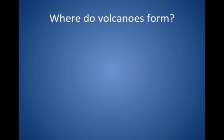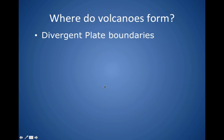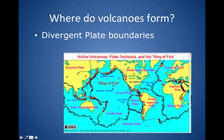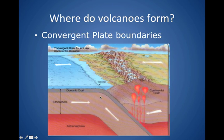We also went over where volcanoes form. At divergent plates, magma comes up between the plates and pushes them apart, and a volcano can form there. If we look around the globe at all of our plotted volcanoes, we can see they're right along some divergent plate boundaries. They also form at convergent plate boundaries, where one plate is subducted underneath the other and the magma melts and heats up to form a volcano.